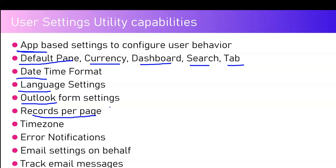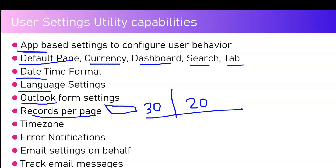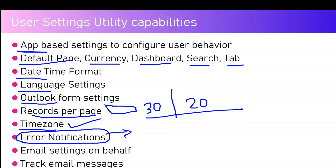Additional capabilities include date/time format, language settings, Outlook form settings, and how many records to display per page. For example, if all users should see 30 records per page in a grid, that can be configured. You could have New Zealand users see 30 records per page and Australian users see 20 records per page. You can also set time zone based on locale, region, or Azure Active Directory groups, and configure whether error notifications should be sent to Microsoft.